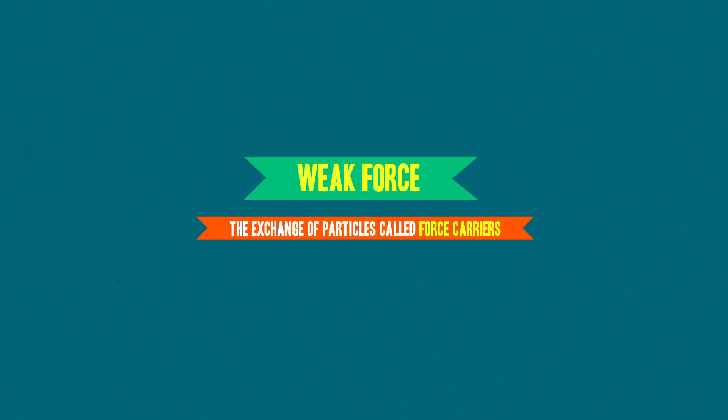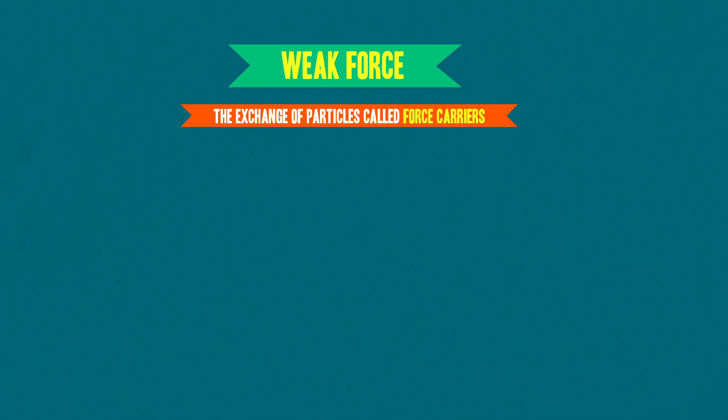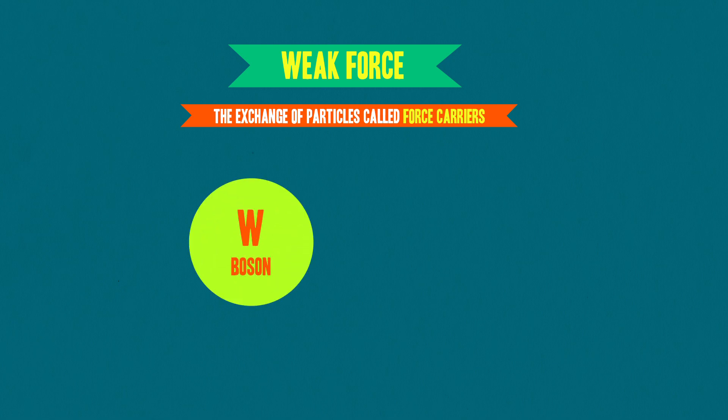In addition to quarks, and thus neutrons and protons, weak force can also interact in a similar way with leptons, the most famous of which is the electron, but also including neutrinos. And as with all fundamental forces, the weak force involves an exchange of particles called force carriers, which are these weird, barely existing particles that convey forces between other particles. Weak force has two force carriers: the W bosons, which can be either positively or negatively charged, or the Z bosons, which have no charge.